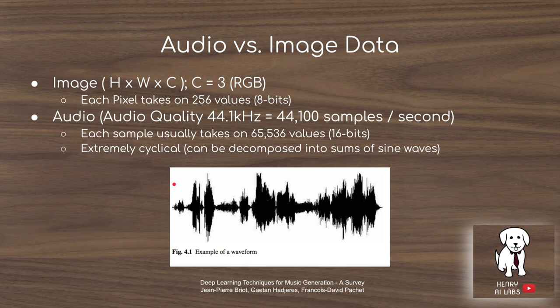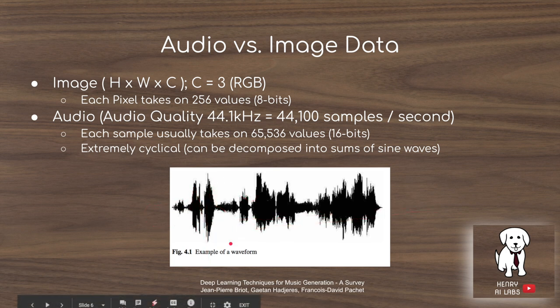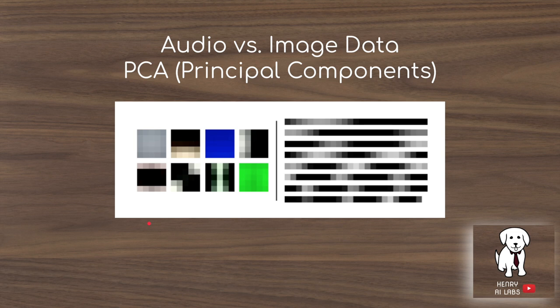In audio, you have a flat time series vector with 44,100 samples per second at full audio quality, but this paper operates at about 16,000 samples per second. Each sample also has a much larger range of values compared to images — 16 bits are typically used for audio compared to 8 bits. Additionally, audio is very different from image data in its inherent structure: it's really cyclical because it consists of a bunch of sine waves, compared to images which have global relationships but aren't as sequence-aligned.